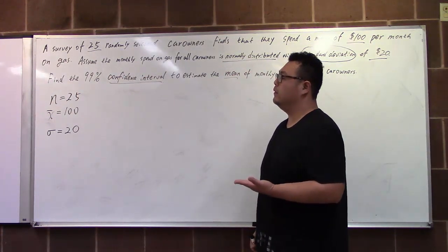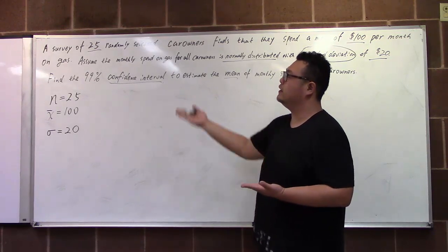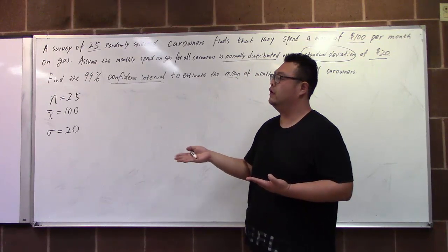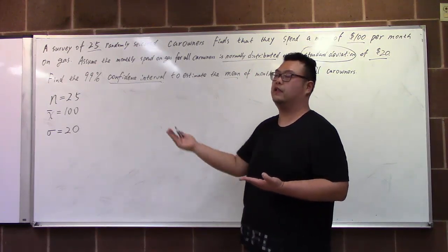Therefore, we are able to use the Z score. No matter the sample size is small, here is normal distribution of the population, so we're able to use the Z based on the central limit theorem.